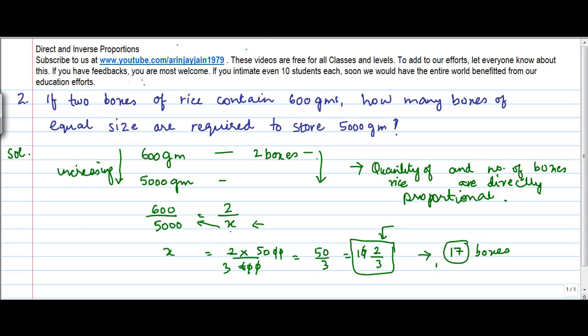To store 5000 grams. So the only thing you need to do here is to apply your mind and understand as to what is the relation between two items. I mean, it's common sensical that the more the quantity which has to be stored, the more the number of boxes that you require.